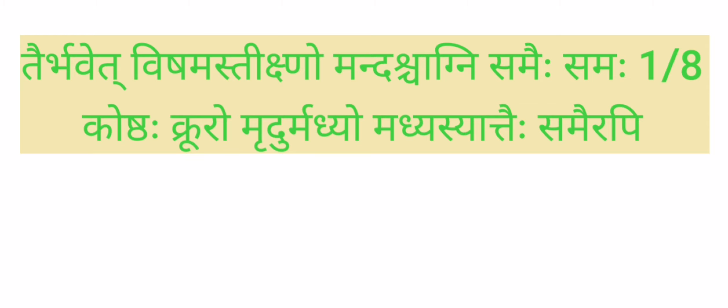In Ashtanga Sangraha Indhutika, the dvandva combinations of three doshas are mentioned. In Vada-Kabha dominance, Agni will have Mandatva Utkarsha — Mandatva will be more in such condition. And in Pitta-Kabha dominance, based on Ahara, sometimes Agni becomes Tikshana and sometimes it becomes Mandam, happening both in Pragirdi and Vigirdi.